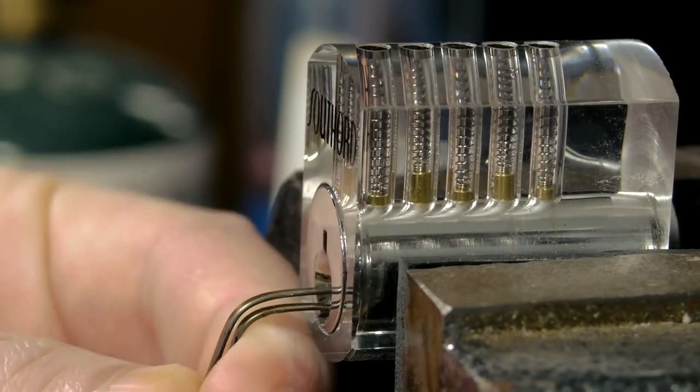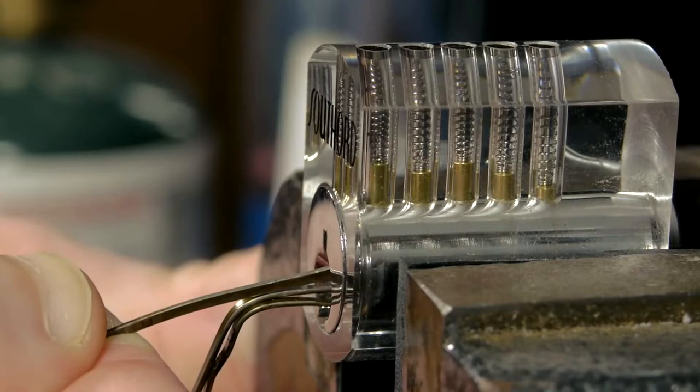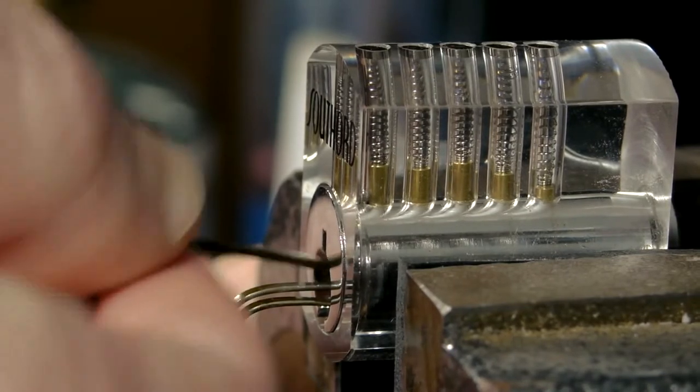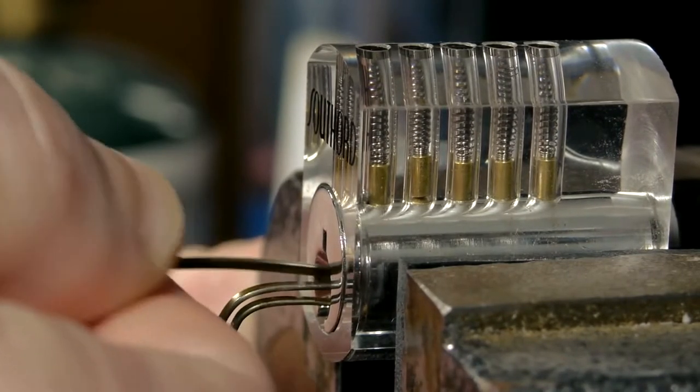This video will show how a standard pin and tumbler lock can be picked with hair pins, just like it's been done in nearly every spy movie ever made.